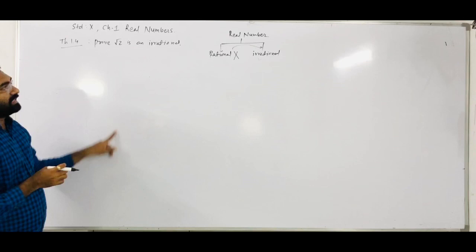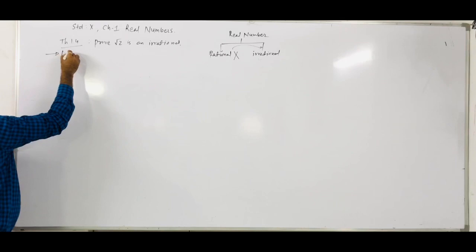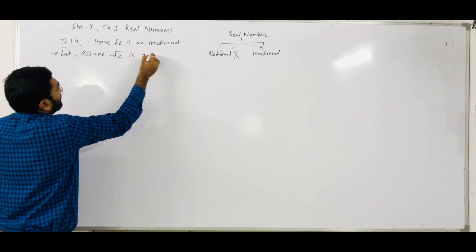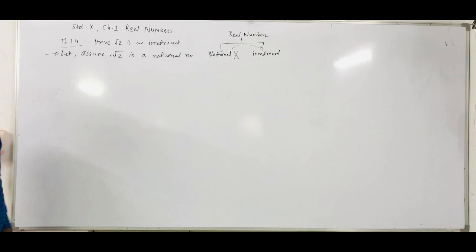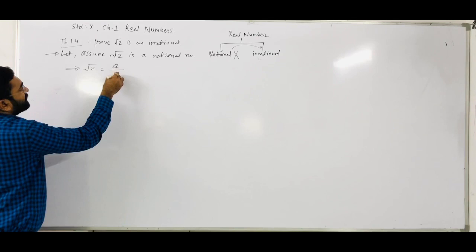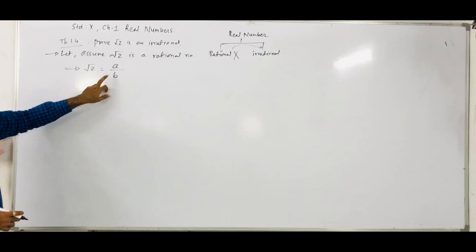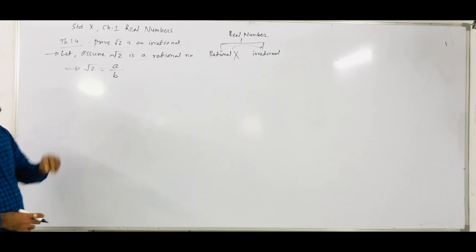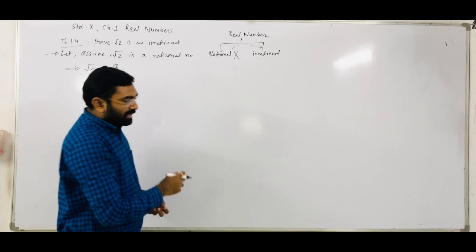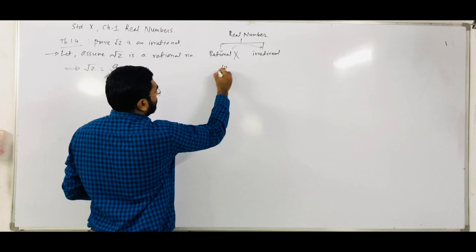So first of all in the solution, let's assume root 2 is a rational number. We represent the rational number as a/b, where a and b are both integers, b is not equal to 0. Also, a and b are co-prime numbers. Co-prime means the numbers have only one common factor, which is 1.